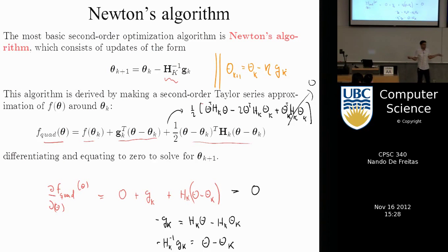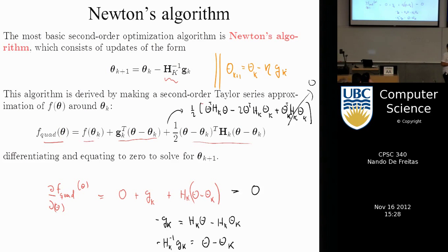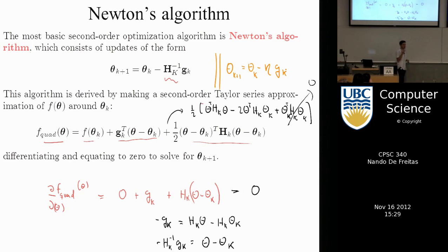Newton's method is the solution to all your questions about how to set the step size. The catch is that the Hessian requires computing second derivatives — more work — and you must store and invert this matrix. Inverting a matrix is one of the most expensive steps a computer must do.